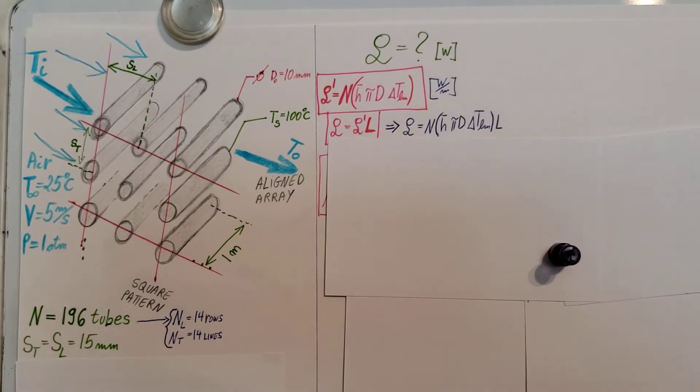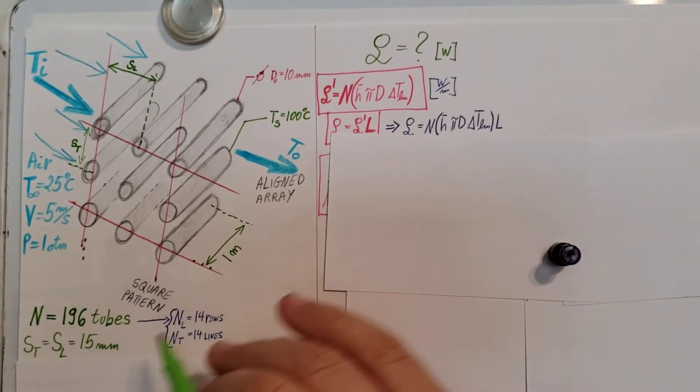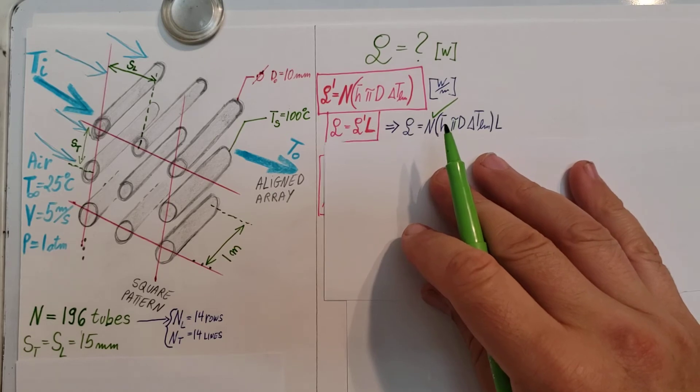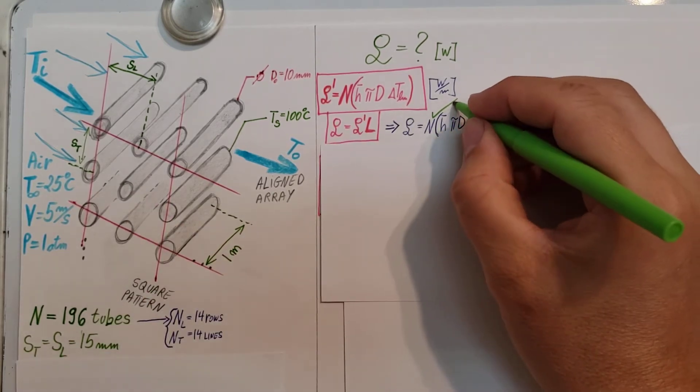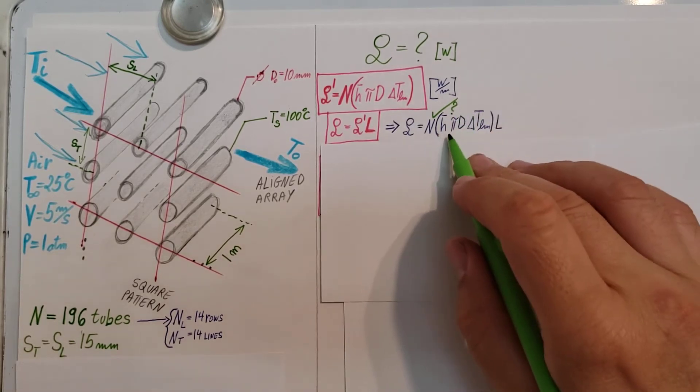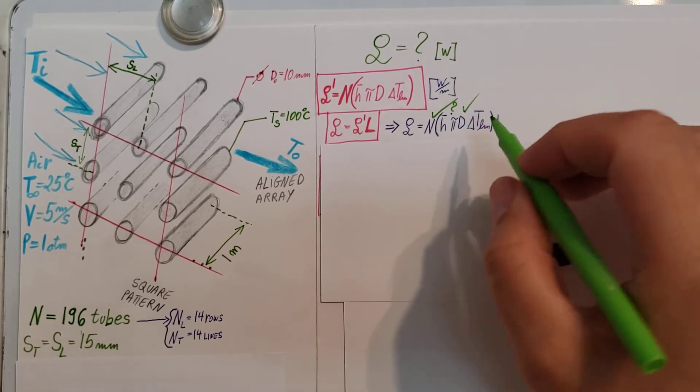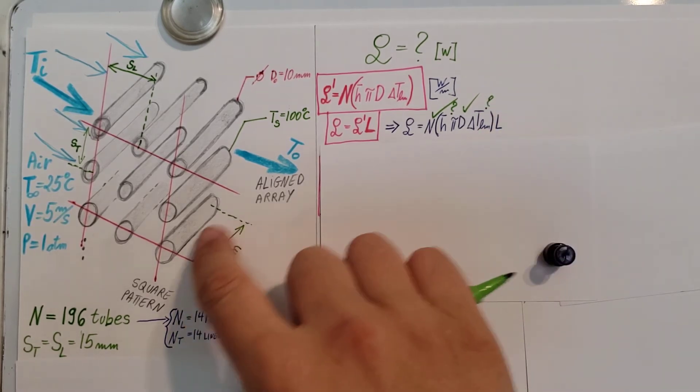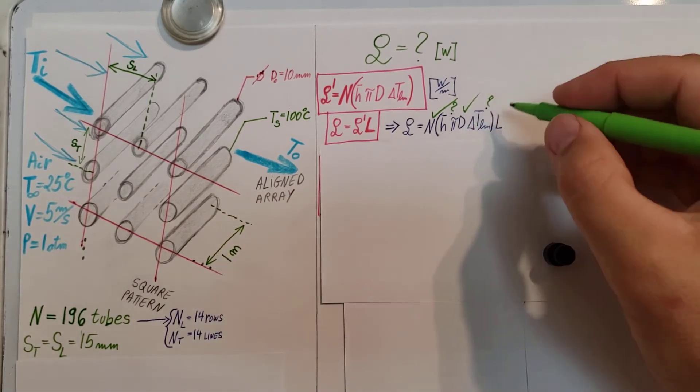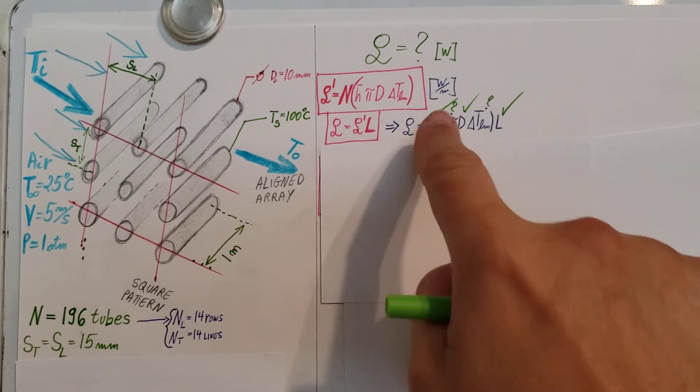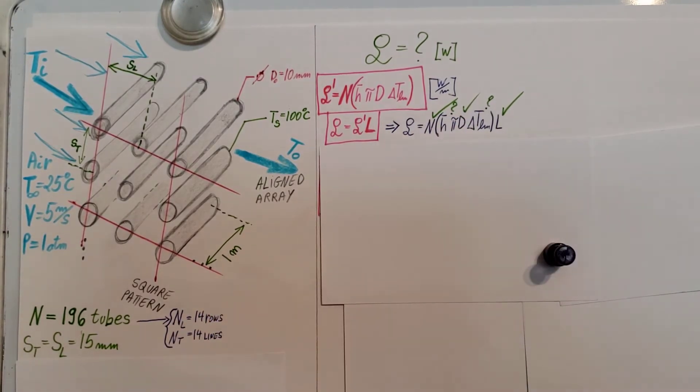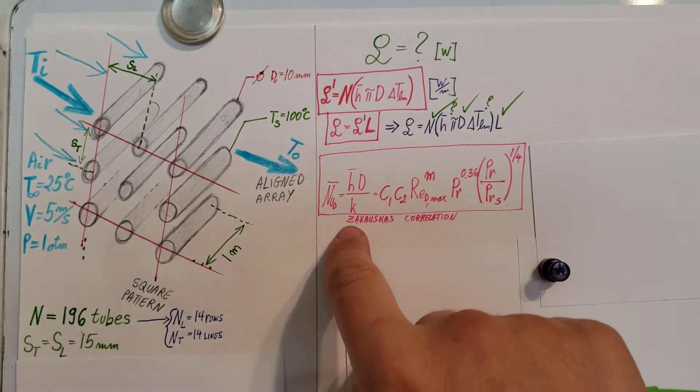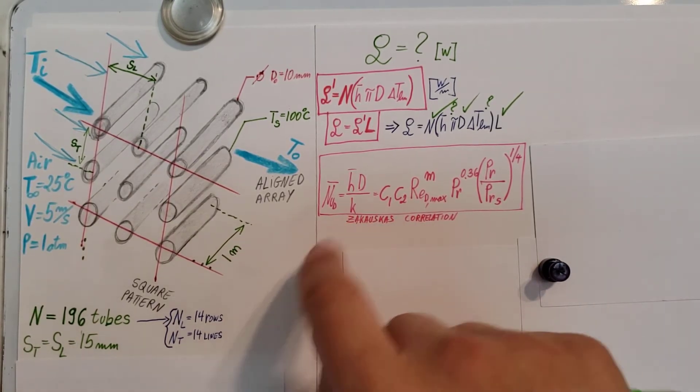Here it is. I plugged this in, and this is our current formula that we're going to be working with. Let's take a look - do we have everything or not? N is the number of tubes, 196, so we know it. H, our heat transfer coefficient for convection, we do not have. Pi we know, the diameter we know, and the log mean temperature difference we do not know. The length is given - we know all these tubes are one meter long. There's two big things that we need to find: H and delta T LM. Let's get started with our heat transfer coefficient. We're going to rely on Zakowskas correlation.